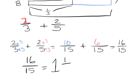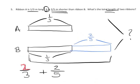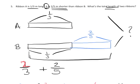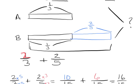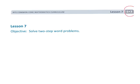Ten-fifteenths plus six-fifteenths equals sixteen-fifteenths, which is one whole and one-fifteenth. The answer is one and one-fifteenth meters. The tape diagram shows the visual layout, and below is the mathematics. That's grade five module three lesson seven — using tape diagrams to solve two-step word problems.